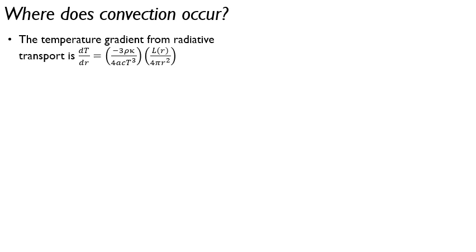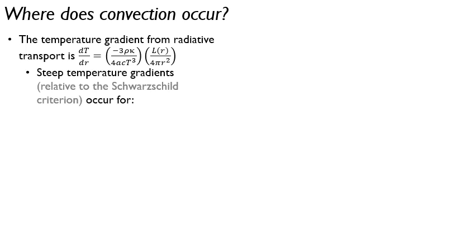You can look in the book and in the notes what temperature gradient you need for convection to occur. So then the question is when do we achieve that? We should look at the temperature gradient from radiative heat transport. There's basically two components. You have the density times opacity over the temperature to the third and some constants, and then you have a flux term here.